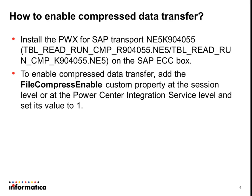To enable compressed data transfer in Power Exchange for SAP, the first step is to install the compression transport on the SAP ECC box. For the Power Center configuration, you have to set a custom property named 'file_compress_enable' to 1, either at the session level or at the Integration Service level. Keep in mind that setting it at the Integration Service level will have a higher impact and is going to affect all your SAP R3 extract sessions.